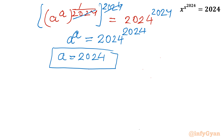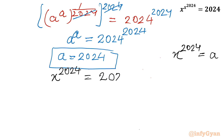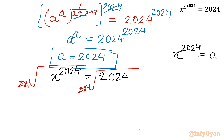Now let us put back the value of our substitution a. It was x raised to the power 2024 — that was our substitution a. So here I will write x raised to the power 2024 equal to 2024. Now I will take the 2024th root of both sides. The 2024 power with the 2024th root cancels out. So our final answer is x equal to the 2024th root of 2024.